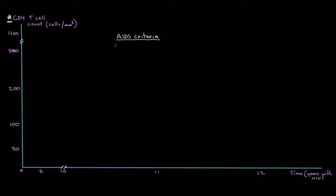So when your CD4 cell count has dropped from its normal levels of about 1,200 or so CD4 cells per cubic millimeter of blood, to less than or equal to about 200 cells per cubic millimeter of blood, you've developed AIDS.